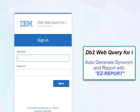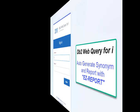In this DB2 Web Query for i video, you will learn how to quickly auto-generate a synonym and a report using a new utility called EasyReport.